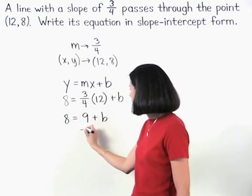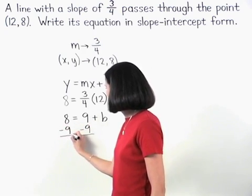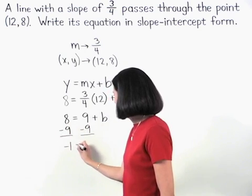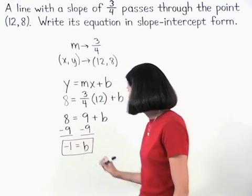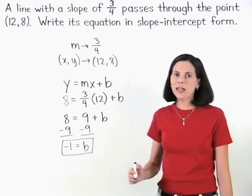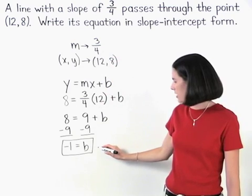And subtracting 9 from both sides, negative 1 equals b. So m equals 3 fourths, and b equals negative 1.